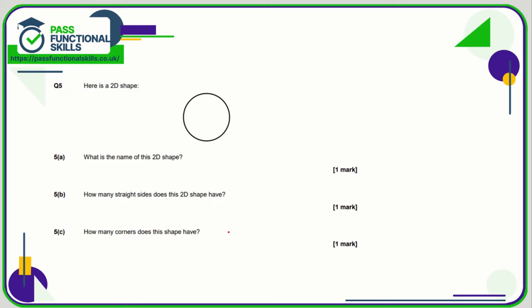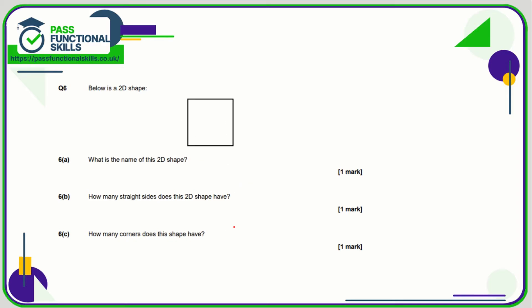The name of this 2D shape is a circle. How many straight sides does a circle have? Of course it doesn't have any. How many corners? Also zero. The next shape is a square — how many straight sides? One, two, three, four. And how many corners? You just know it has four corners.